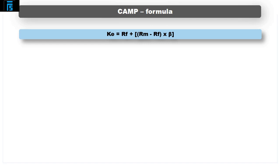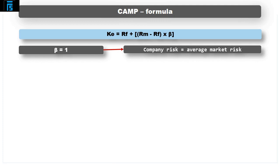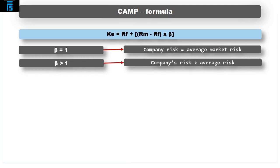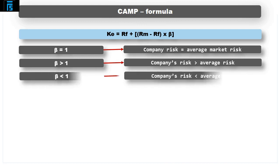Beta is a risk score assessed by comparing the historic volatility in a share price with the volatility in the market during the same period. A beta of 1 indicates that the company's risk is the same as the average market risk. A beta higher than 1 indicates a higher than average risk. A beta lower than 1 indicates a lower than average risk.